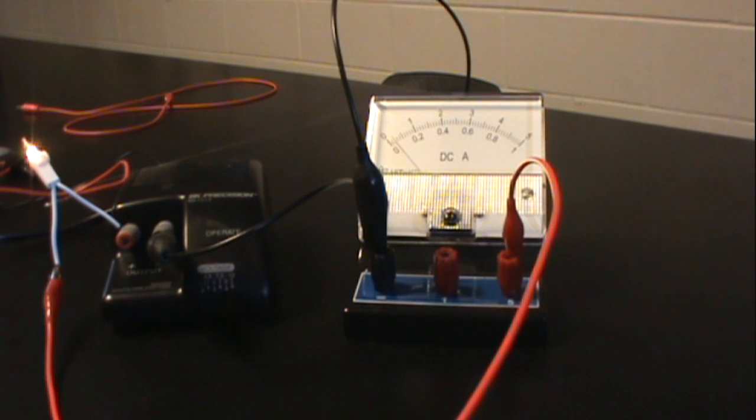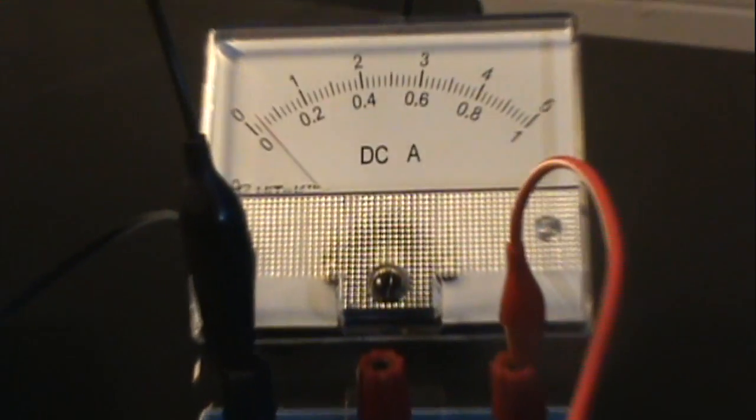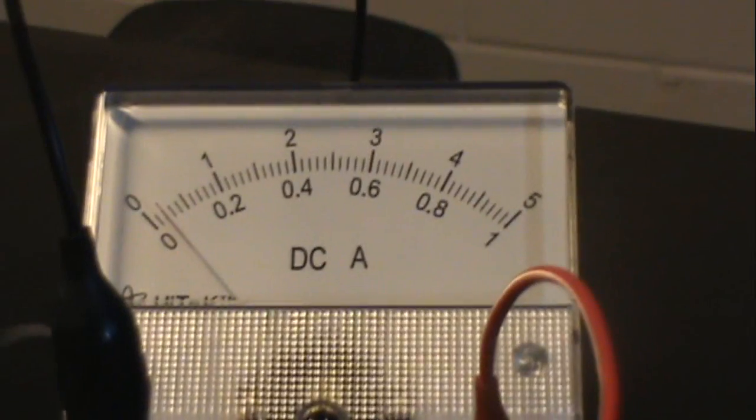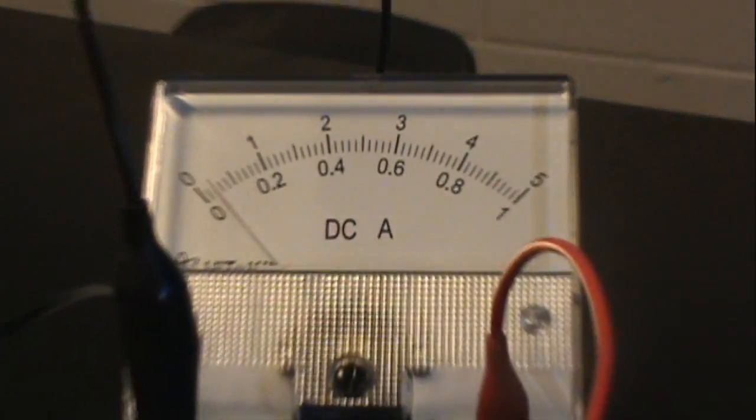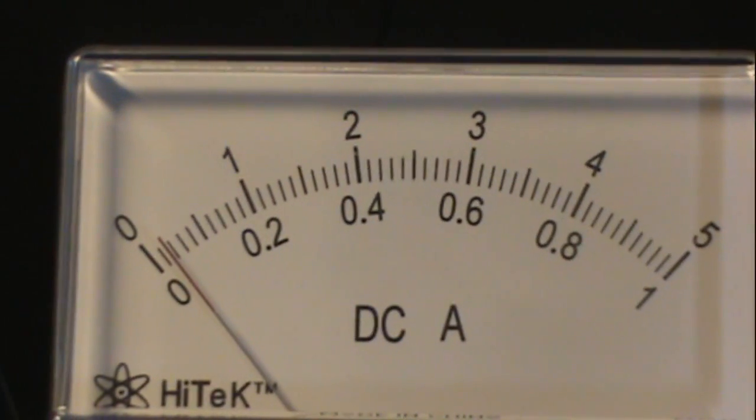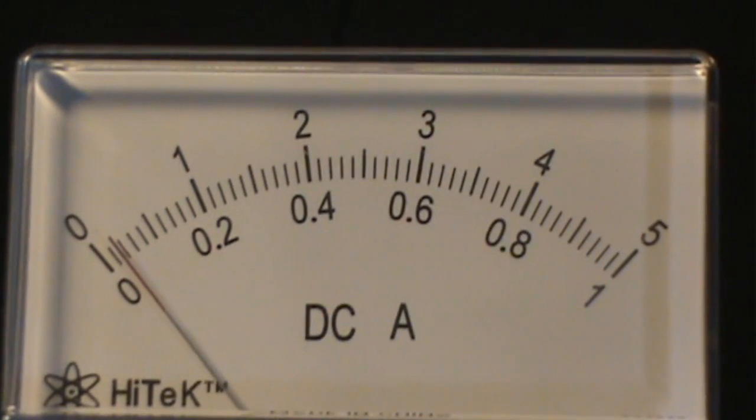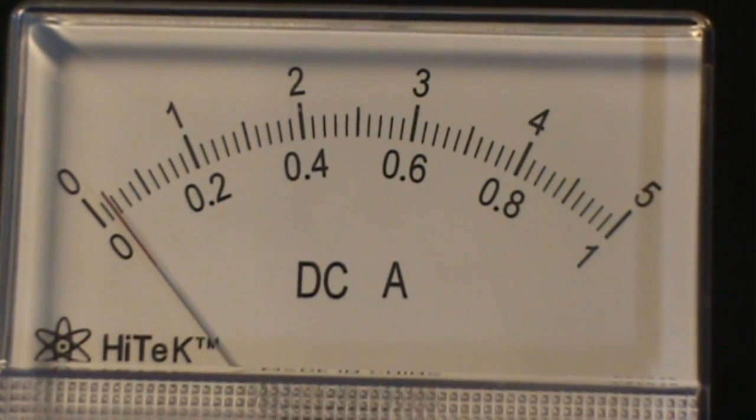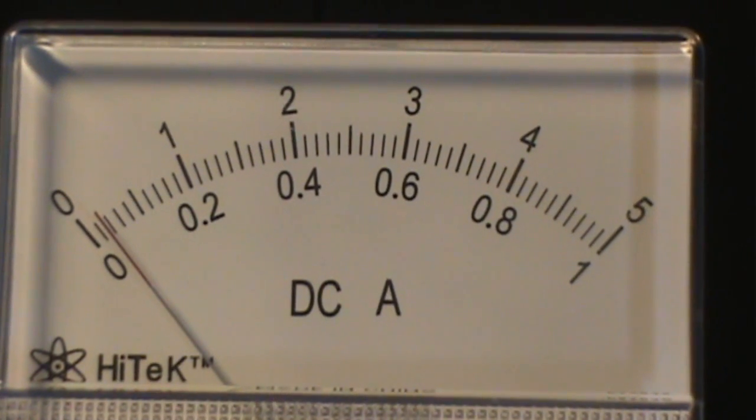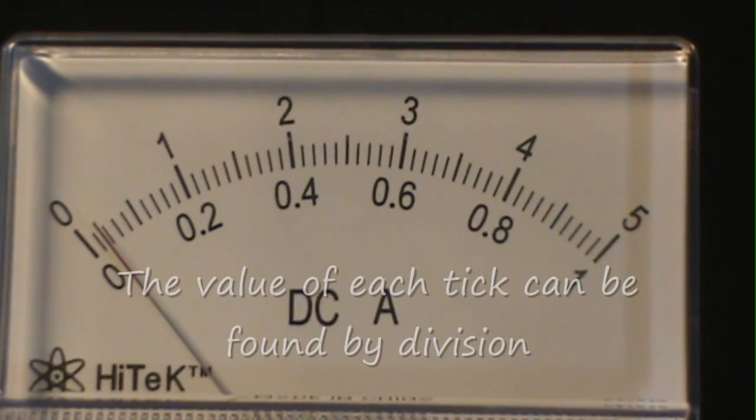We are now going to look at proper use of an ammeter. So as you can see as I zoom in here, we have a DC ammeter. It is currently set in the 0 to 5 amps position, and we are not running a whole lot of current here. As we try to read this thing, you can see that we are in the 0 to 5. So we're going to read the top scale.